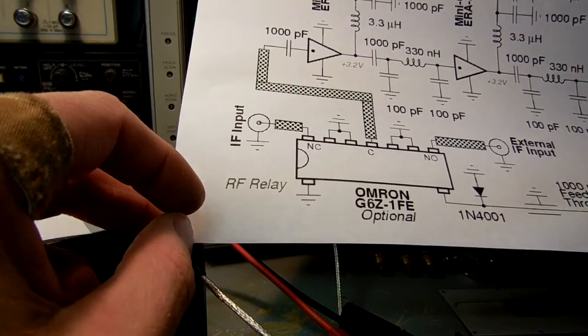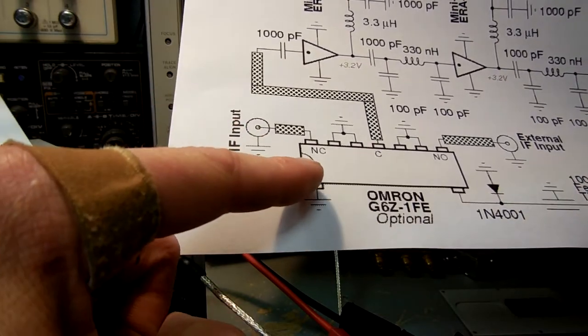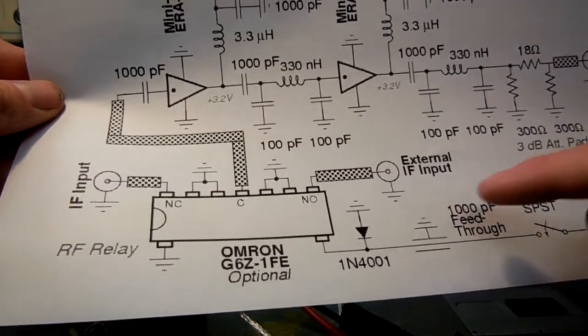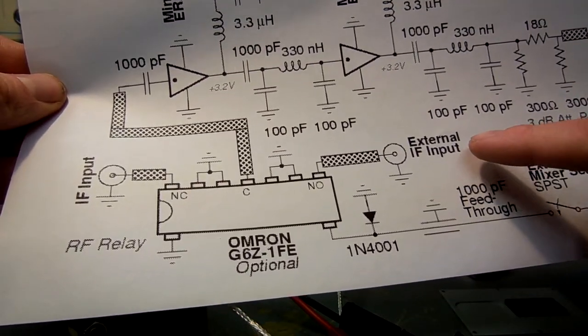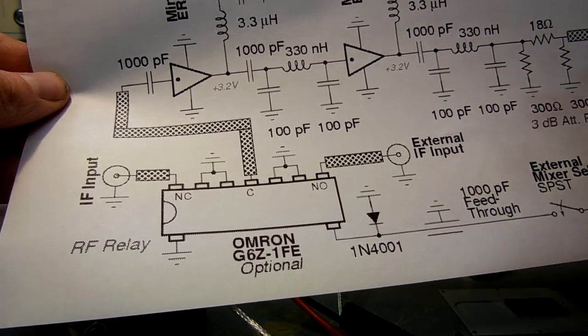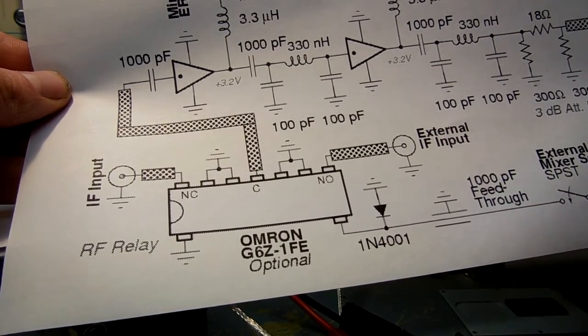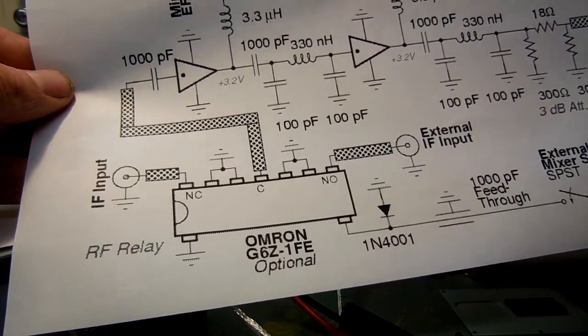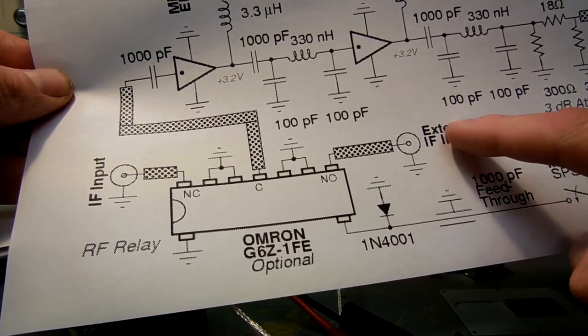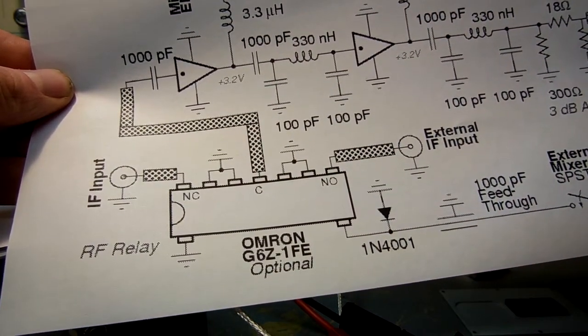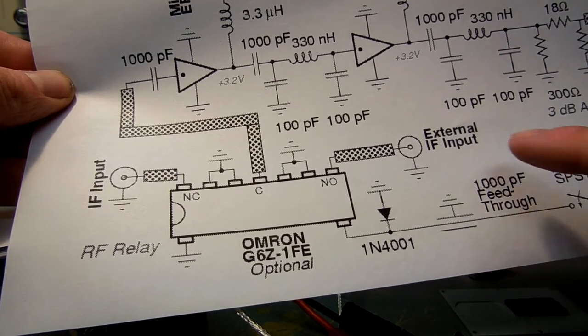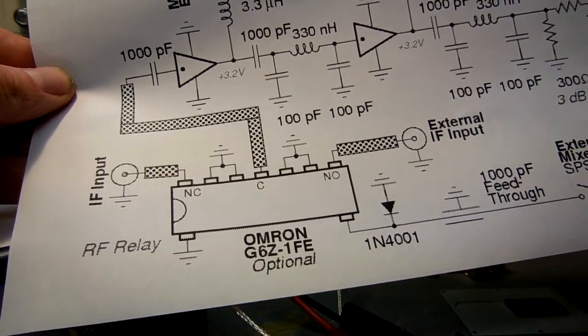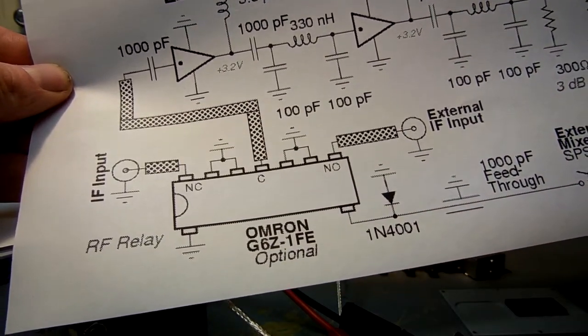I have an Omron G6Z-1FE RF relay, and this just selects an external IF input if we want to use an external mixer. This is handy if we want to make a microwave down converter that also operates at 10.7 MHz IF. We can use the IF chain and the logarithmic amplifiers and the resolution filters from an external mixer. This isn't in Scottie's original design, but I highly recommend adding this option.